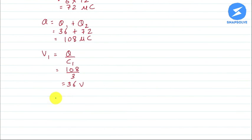And similarly we will find V2. V2 will be Q upon C2. Q is 108, C2 was 6, so this will be 18V. So we got both of these things.